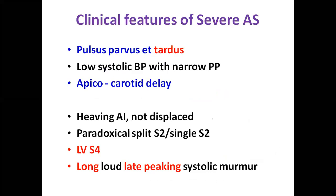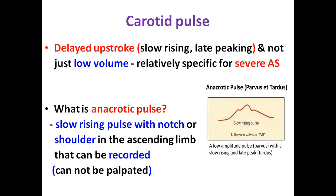Clinical features of severe aortic stenosis: pulsus parvus et tardus — low-rising, low-volume pulse with narrow pulse pressure and anacrotic character; apex-carotid delay; heaving apical impulse which is not displaced; either a paradoxical split S2 or a single S2; presence of LV S4; and a long late-peaking systolic murmur. All these suggest severe aortic stenosis.